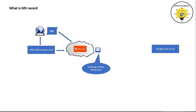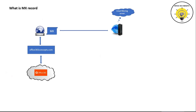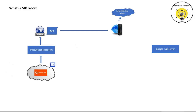However, it is not necessary to point the MX record only to Office 365. For example, if you have your own email server which provides protection for your emails, you can point the MX record to that particular email server. When an external domain sends an email, that email will be delivered to that email server first, which will scan and filter it, and then forward it to Office 365.